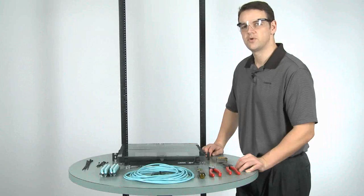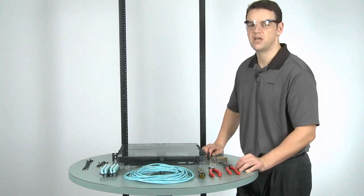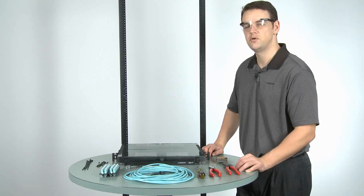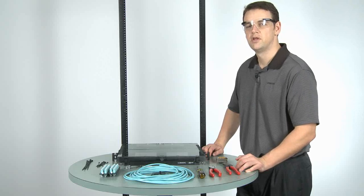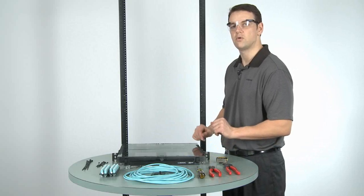I'm going to demonstrate the direct termination using only the CCH-01U housing. The procedures for the 2U and 3U are almost identical. The first step is to actually rack mount the hardware into your rack.